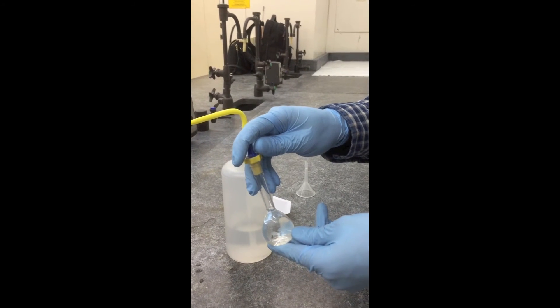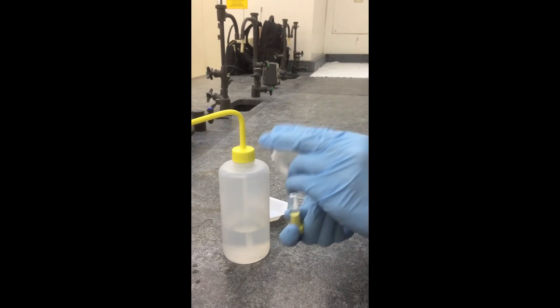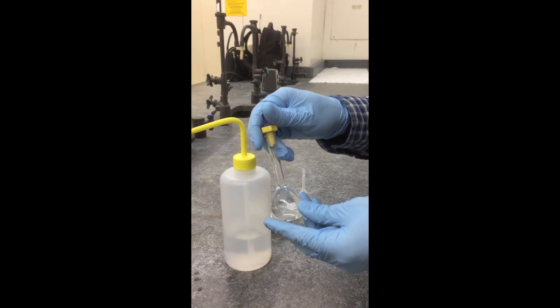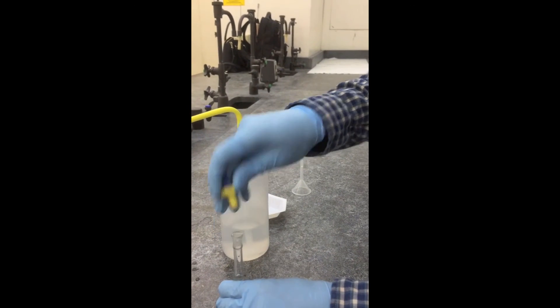Once all the solute has been dissolved, one can then add the remaining amount of water ensuring the meniscus is level with the volumetric calibration mark.